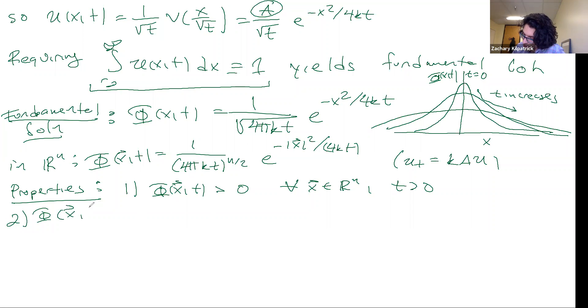Phi of X,T is also C infinity. This is maybe a little bit less self-evident. But essentially, we can differentiate this with respect to X as many times as we like, and we're going to have no discontinuities.